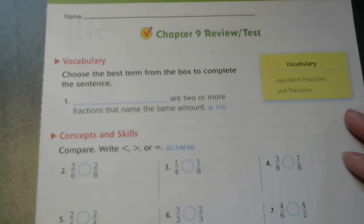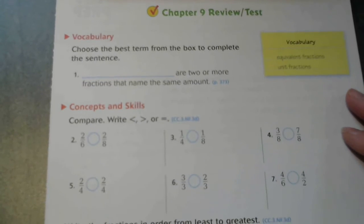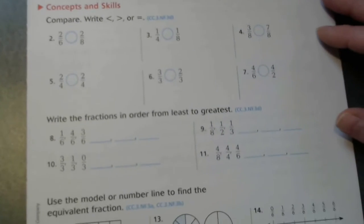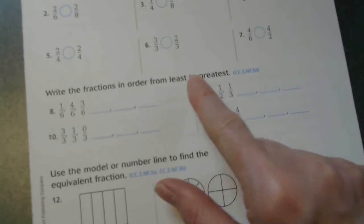You only have one vocabulary word and on your concepts and skills you'll be writing less than, greater than, or equal. And 8 through 11, you'll be writing the fraction in order from least to greatest.